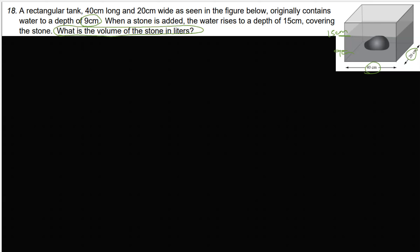The question is: what is the volume of that rock or stone in liters? First we need to find the volume in centimeters cubed, since those are the dimensions given. The initial volume is 40 × 20 × 9. Using a calculator: 40 times 20 times 9 gives us 7,200 centimeters cubed.